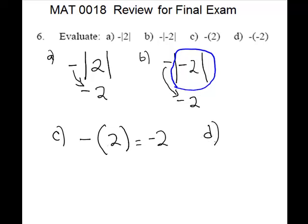And part D. Opposite of a negative 2. Again we have parentheses. Parentheses has no meaning, it's just holding the sign in there. So this is a negative 2. Opposite of a negative 2 gives you a positive 2.